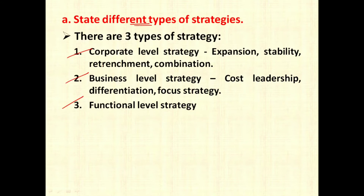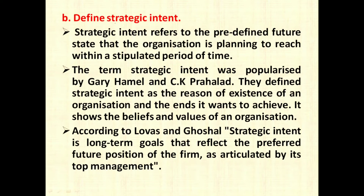Business level strategy can be determined on the basis of generic business strategy given by Michael Porter. So they may be cost leadership strategy, differentiation strategy, or focus strategy. Functional level strategies are the strategies implemented at the manager level — that is finance strategy, marketing strategy, HR strategy, etc.